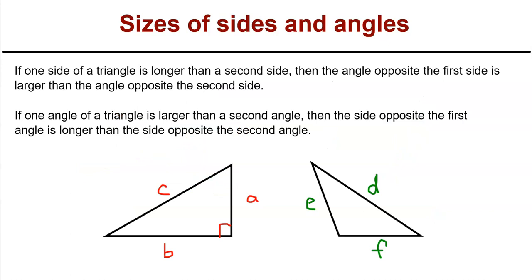That happens to be true because of two important ideas. First: if one side of a triangle is longer than a second side, then the angle opposite the first side is larger than the angle opposite the second side. The same is true in reverse: if one angle of a triangle is larger than a second angle, then the side opposite the first angle is longer than the side opposite the second angle. Go ahead, pause the video, and write down both of these statements.